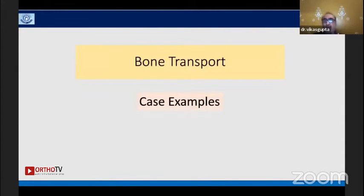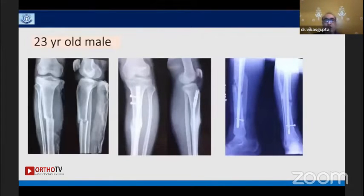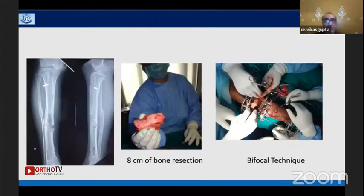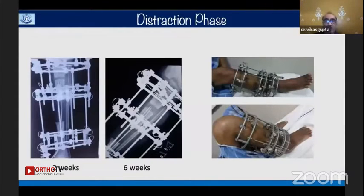Here is a case example: a 23-year-old male had a closed fracture treated with an interlocking nail elsewhere, which became infected. The nail was removed, leaving about eight centimeters of bone loss. We used bifocal bone distraction; the corticotomy was done with a Gigli saw over an intramedullary wire, and with the five-eighths ring he maintained a good range of knee motion.